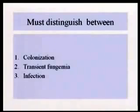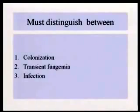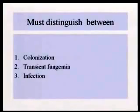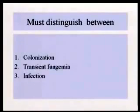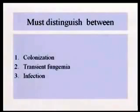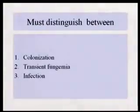Colonization means the organism is there but it's not causing any disease. Transient fungemia means that you sometimes get organisms in the bloodstream — this was noted early on with streptococcus and bacteria when a person had a tooth extraction. Normal hosts would just take care of them and they're gone. That's a transient fungemia. The third is actual infection that needs therapy.